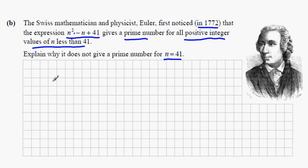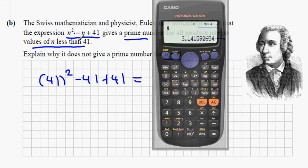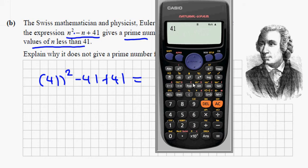Replace n with 41 and we get 41² − 41 + 41. So 41 squared is 1681.